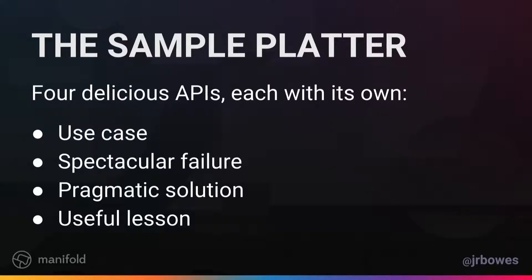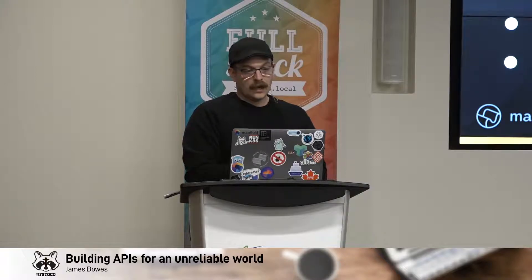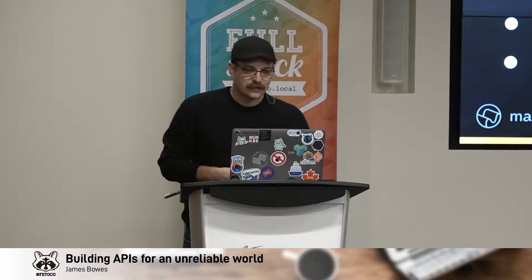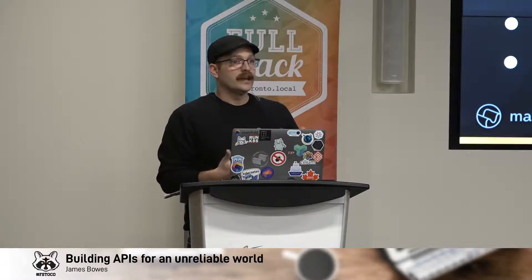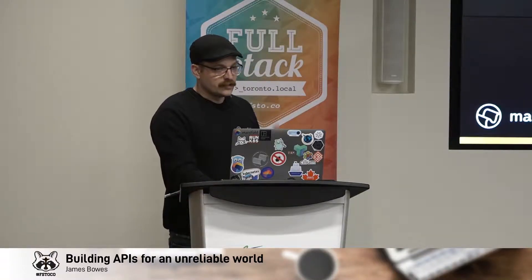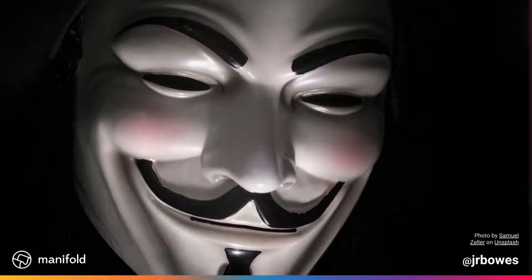What we're going to do today is I'm going to run you through four scenarios of things that have happened to me in real life while writing code — problems that we were trying to solve and then the spectacular failures that we experienced, both in how our code failed to do what it was supposed to and how the world itself failed around us. The excellent and pragmatic solution that we came up with, and then hopefully a useful lesson that you can take away for when you're building your own applications and APIs. I'm going to assume all responsibility for any problems and take none of the credit for the success of the solution.